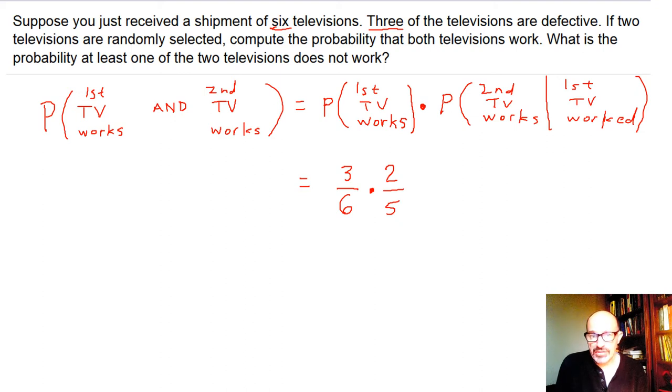And so the probability that both TVs work is six over thirty, multiply across, or one-fifth, or 0.2. So that's the probability that both TVs work.